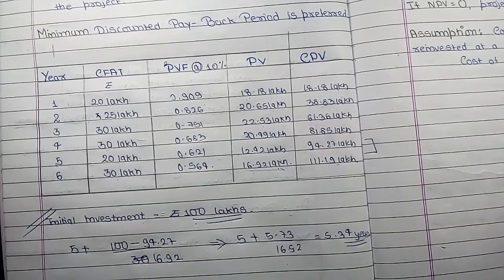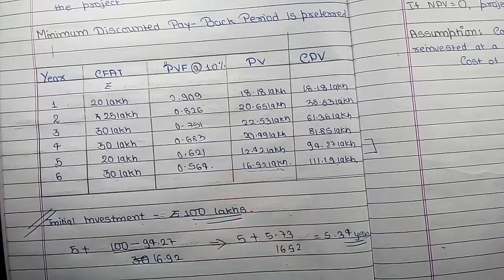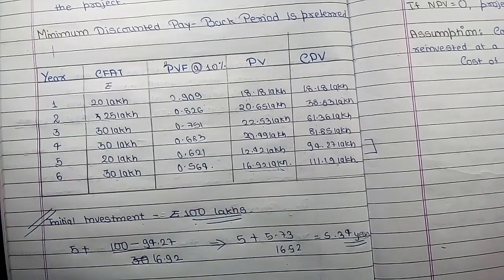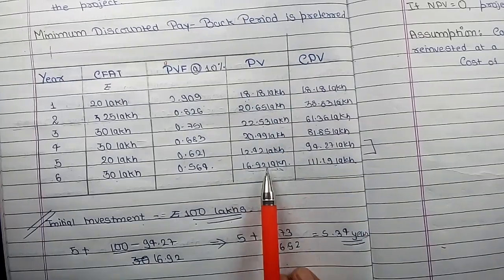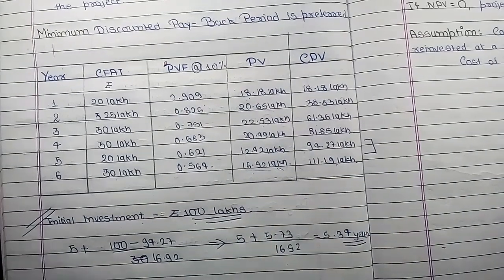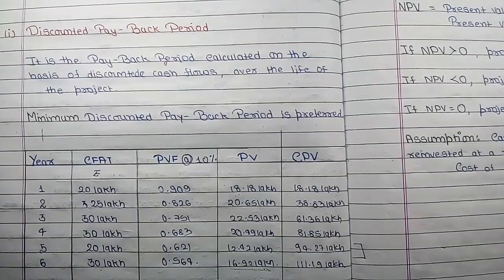This is the way to calculate discounted payback period. We calculated it like the regular payback period. The only change is that here we have considered present value factor and taken present values. The minimum discounted payback period is preferred, just as with the regular payback period.